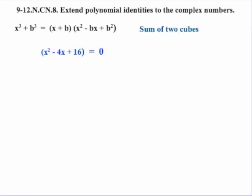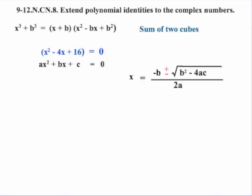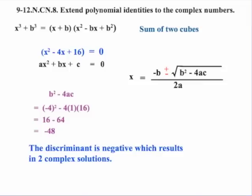Taking x squared minus 4x plus 16 equals zero and applying the quadratic formula, our concern is the discriminant. Substituting our values, we get 16 minus 64, which is negative 48. So we automatically know the other two roots will be complex numbers. Since the discriminant is negative, we confirm we're going to get two complex solutions.